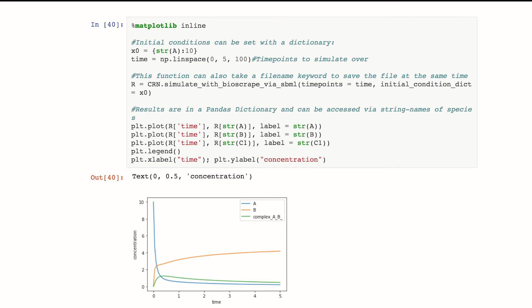These are really easy to use. You take R, which is my results. And I say, I want to get the time out of it. And you get the time. Or you say, I want to get the species A. So I type in STRA and I get the concentration of species A over time.